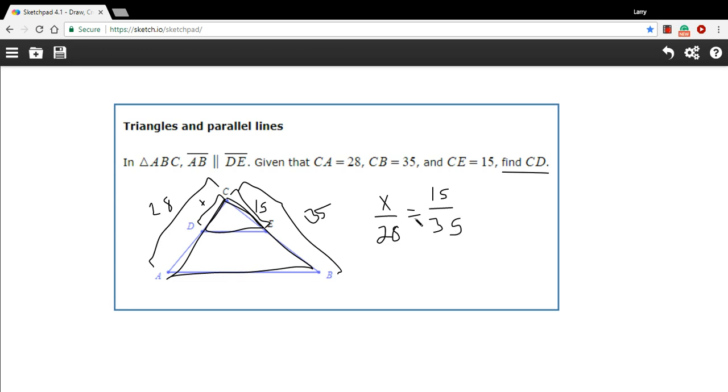So once I've got that ratio or that proportion set up, I can cross multiply and solve for X. So X times 35 is 35X. 15 times 28 is 420. And then we'll just divide by 35 to solve for X. And let's see, I think that gives us X equals 12. So our length over here is 12.